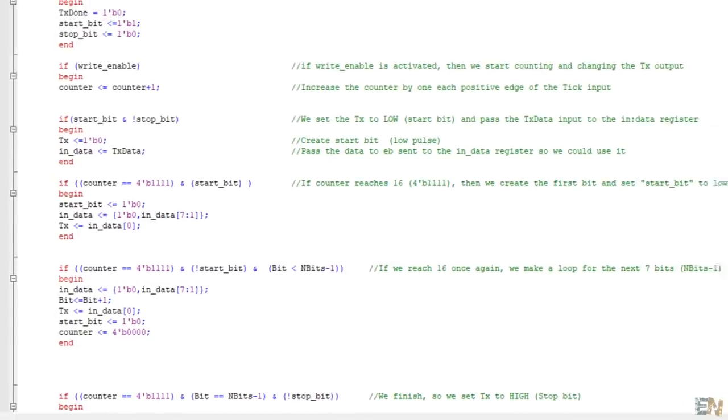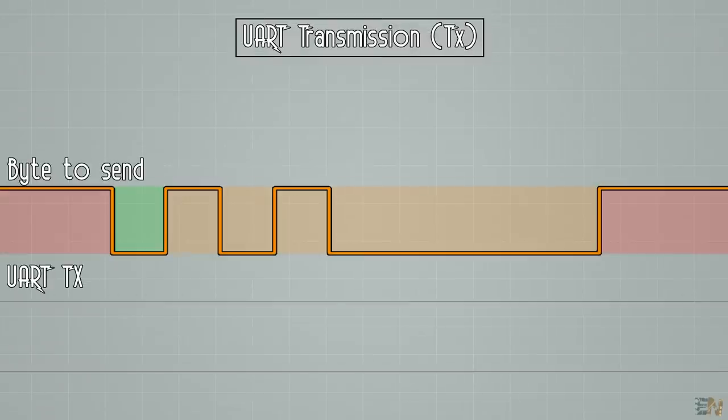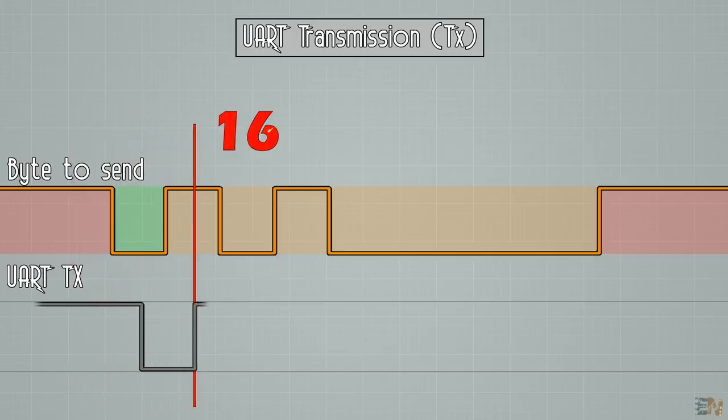Please, once again, read all the comments in this code to understand more, but the state machine is pretty basic. It gets the new data to be sent, counts up to 16 and changes the value of the TX output according to the bits to be sent. Pretty easy, right?